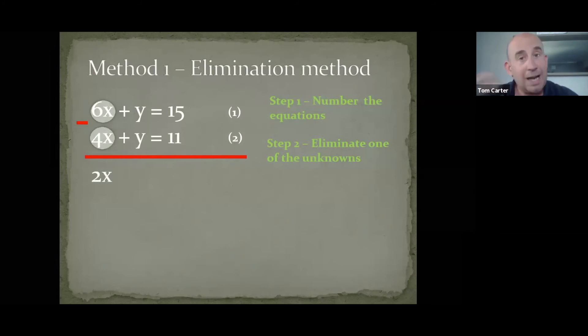Now, like I say, you can add or subtract. It's entirely up to you. I've chosen to subtract because I end up with y take away y, and then that means it's nothing and it disappears. That's why we're doing it. So, y take away y gives us nothing. So the y's are now gone. And then I'll do 15 take away 11. It's 4.